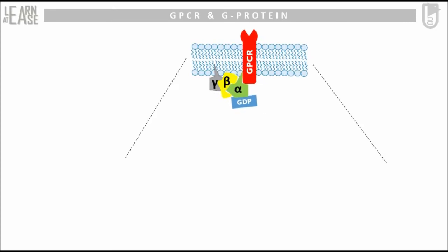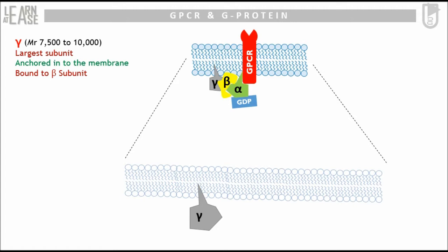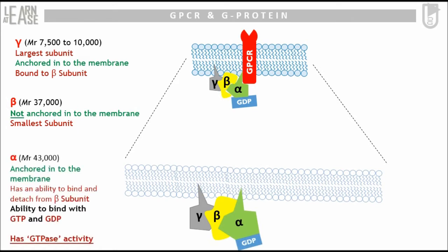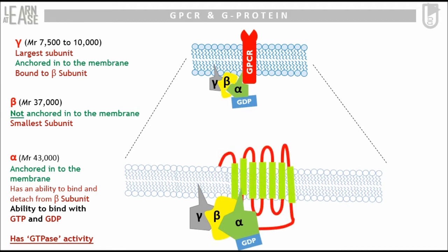The gamma subunit is the smallest subunit with a molecular weight of 7,500 to 10,000 daltons. It is anchored into the membrane and bound to the beta subunit. The beta subunit has a molecular weight of 37,000 daltons; it is not anchored to the cell membrane but is bounded to the gamma subunit. The alpha subunit is again anchored into the cell membrane, can reversibly bind to the gamma-beta dimer, and also binds with GDP and GTP. Most importantly, the alpha subunit possesses intrinsic GTPase activity. Because this trimeric protein can bind to guanine nucleotides GDP and GTP through its alpha subunit, it is collectively named G-protein.